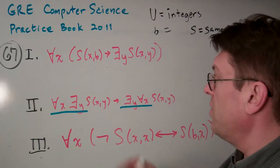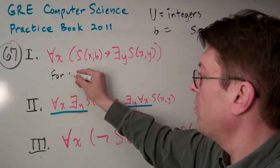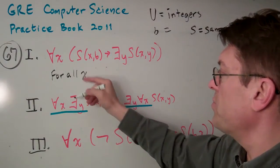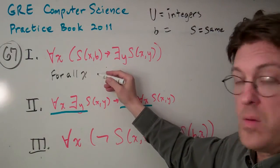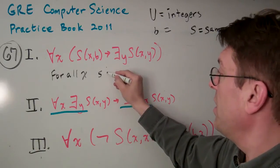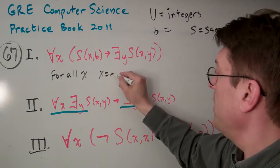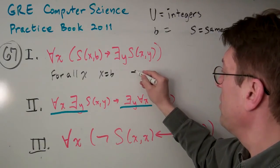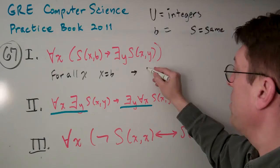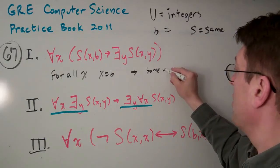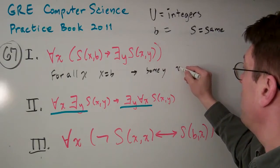So here we have for all X, the statement X equals B implies that there's some Y where X equals Y.